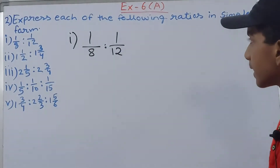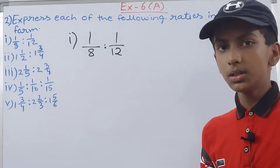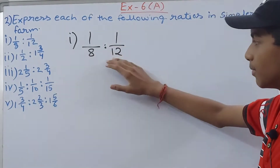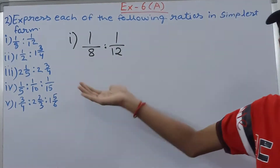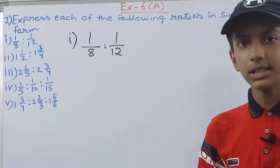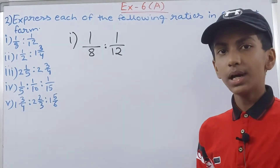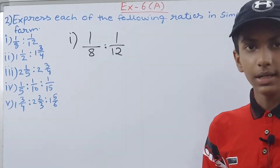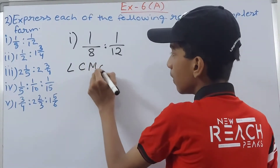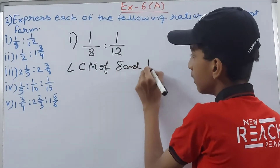Since we are given fractions, in order to simplify them we will find the LCM of the given denominators. Here the denominators are 8 and 12, so we will find their LCM and then multiply each fraction by that LCM.